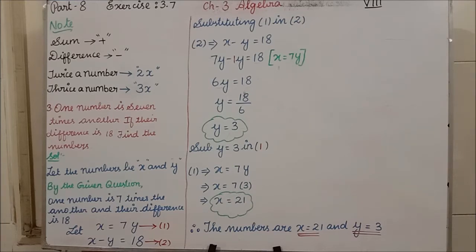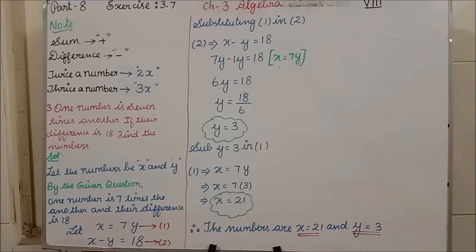Students, exercise 3.7 is fully based on statement type problems. In statement type problems, you have to read the question one or twice so that you come to know what they are asking and what we have to find. The equations are not given directly — they are given in the format of a sentence, and we have to convert that sentence into equations. That is the first step in exercise 3.7.